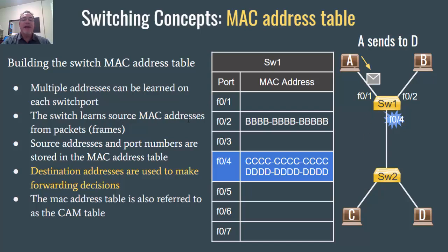The switch learns source MAC addresses from frames. When A sends to D, the frame has a source MAC address of all As — we're using that to keep it simple. When that frame hits the switch and it sees the source MAC address of host A (all As), it looks in its MAC address table and sees that port 1 has no MAC address registered. So it registers host A's MAC address associated with port 1 and adds it to the MAC address table.